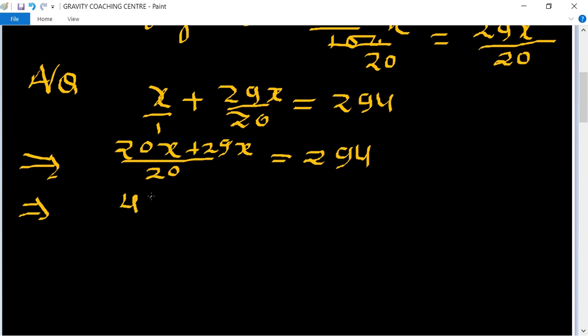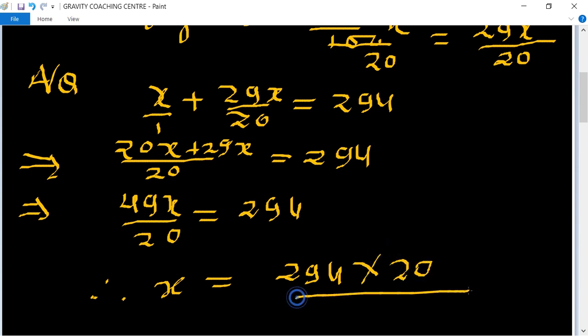Then 49x upon 20 equal to 294. Therefore x equal to 294 multiply 20 upon 49. Cancel by table of 7, 7 times 7 is 49.